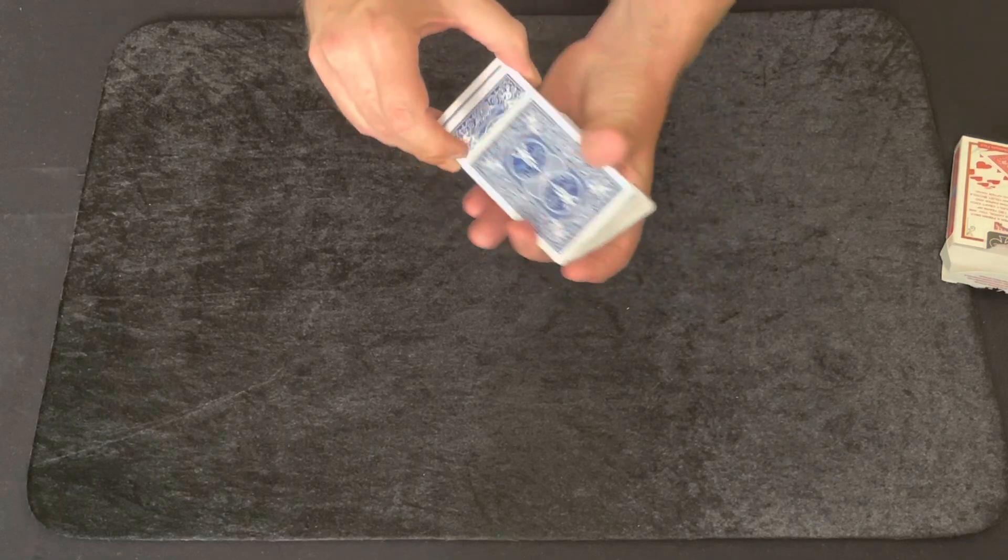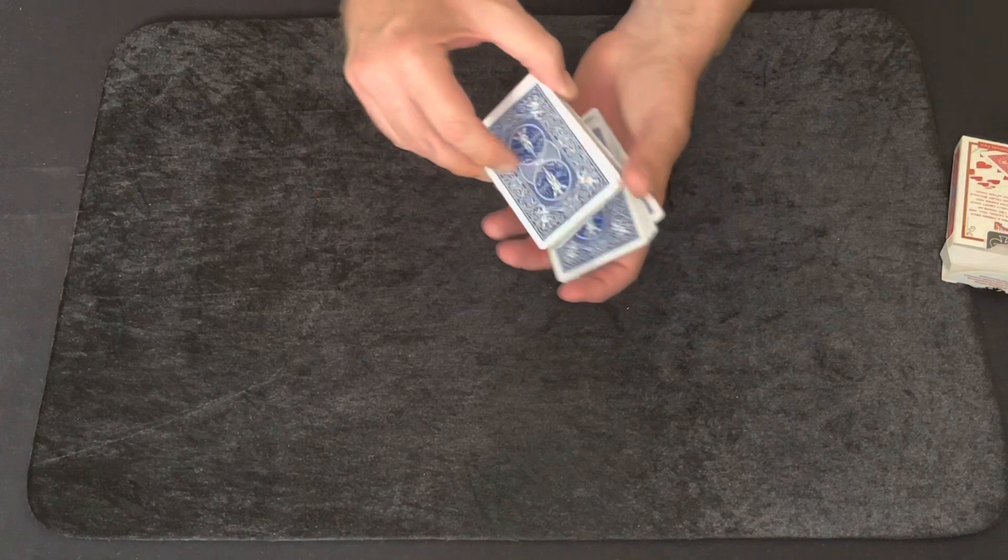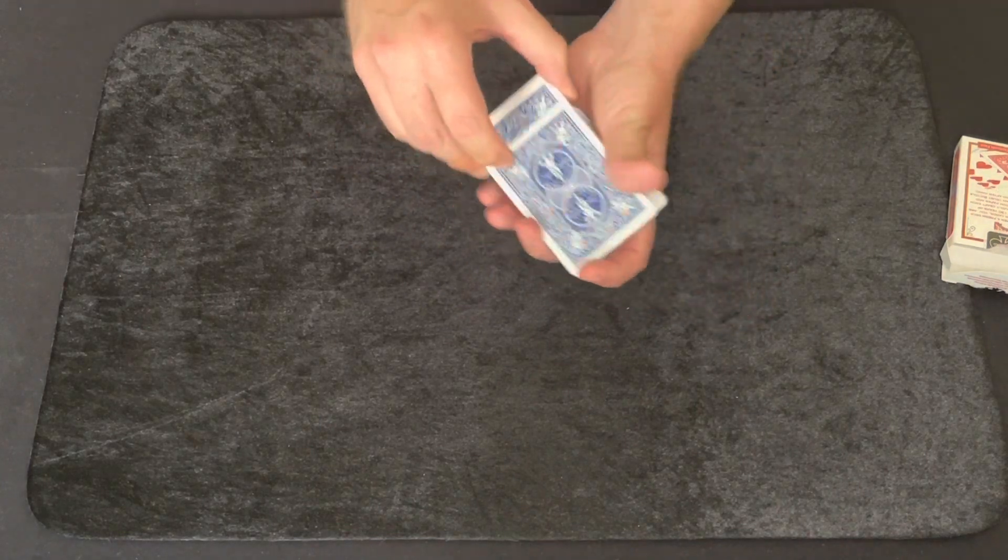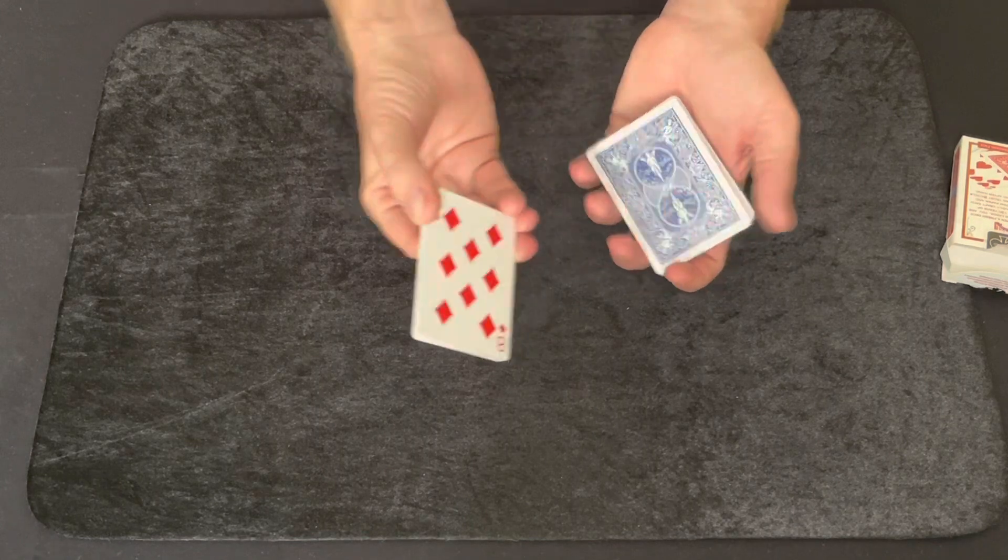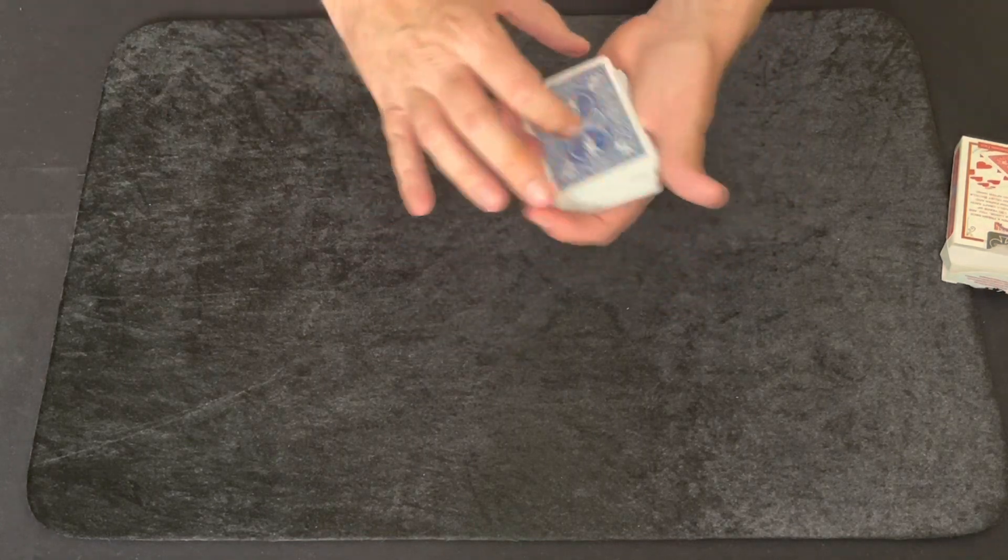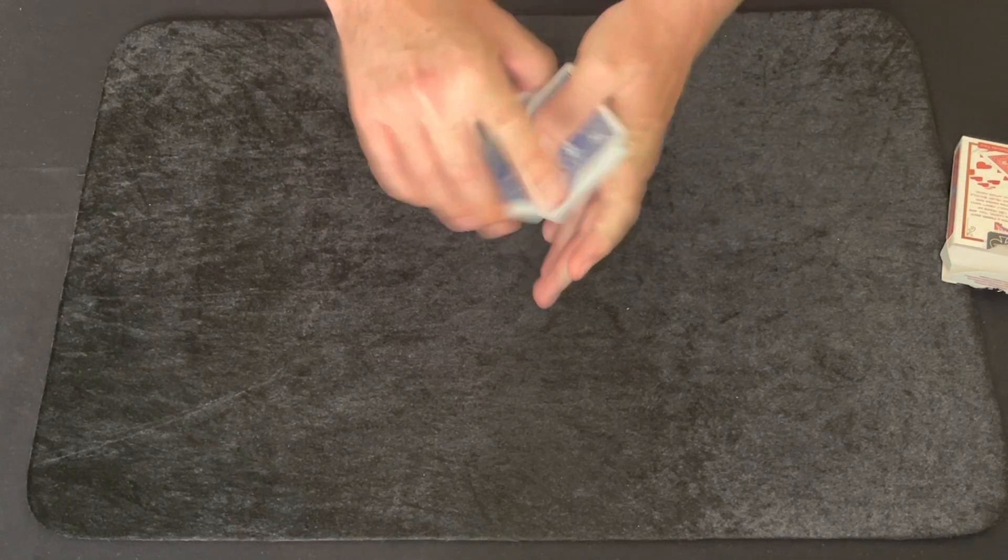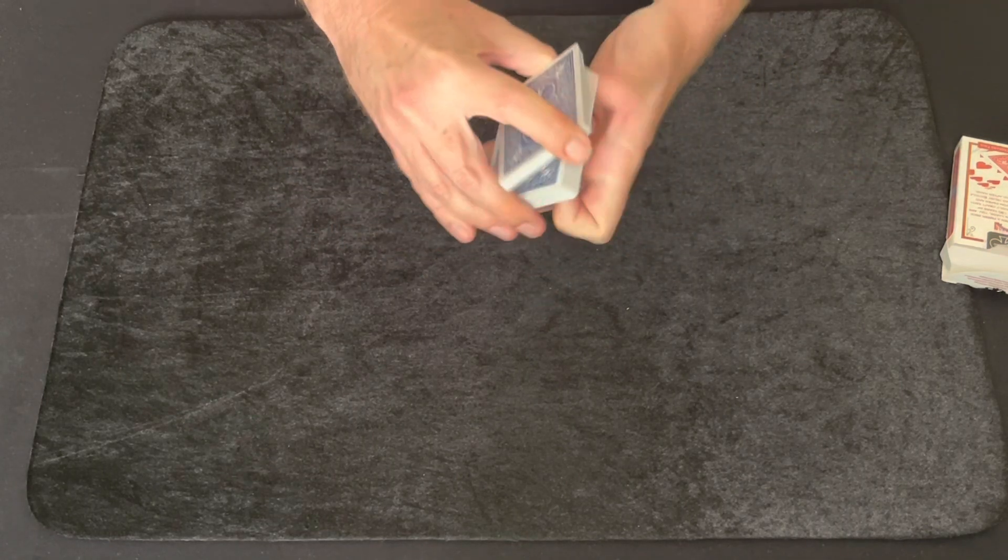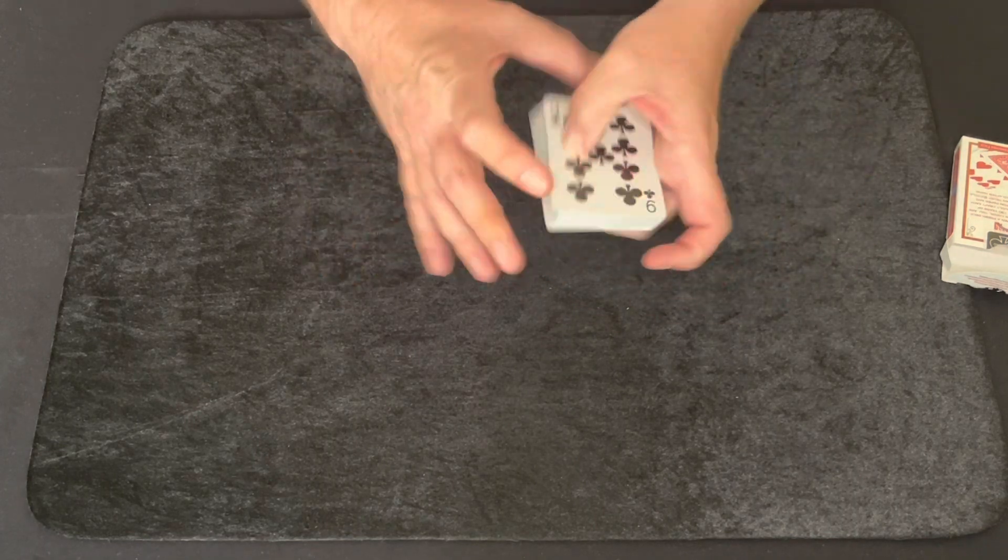To now force because your eight of diamonds is now on the bottom. And so you just keep doing the Hindu shuffle until they say stop, square up the cards, you show them that it's the eight of diamonds, put it back in the deck, give it a few cuts. Hopefully you get the eight of diamonds somewhere in the middle of the deck then you say we're going to do the process of elimination and that's the twist in this one.